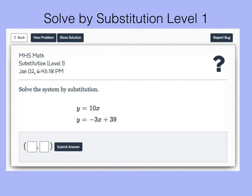But because they're both written in terms of y, we can set the expression for the first function equal to the expression for the second function. So we can write an equation in terms of x: 10x equals negative 3x plus 39.